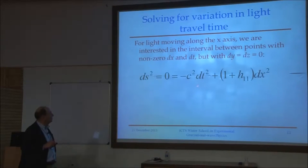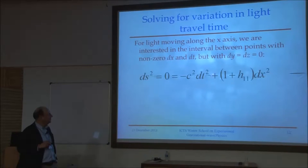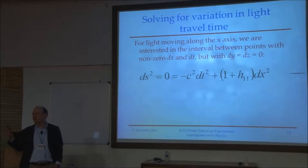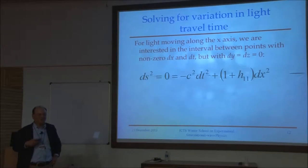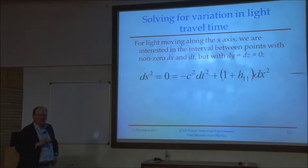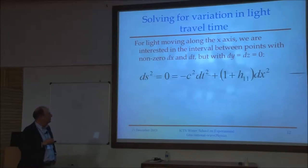Here is a statement about two events along the x-arm: if they're separated by coordinate separation dx, they'll have a time separation dt such that this combination is zero, where h₊ is the amplitude of the plus component of the gravitational wave aligned with the x-arm. We've got enough information here to learn a lot about what happens to that light going down the x-arm.